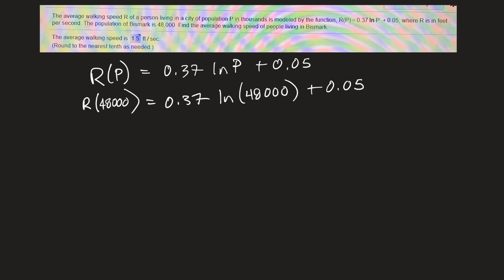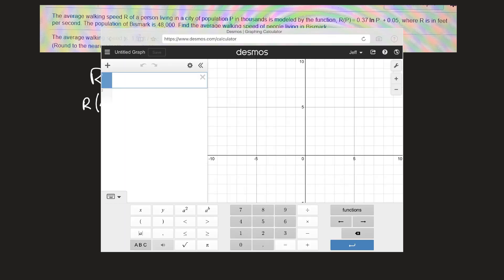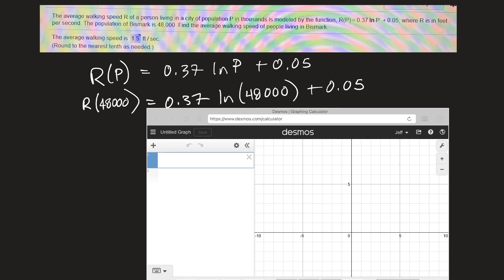Okay, and now we just plug that into our calculator. Decimals, browser, decimals. Okay, so I want y, not y, I just want 0.37 times, I guess I can just put a ln now.